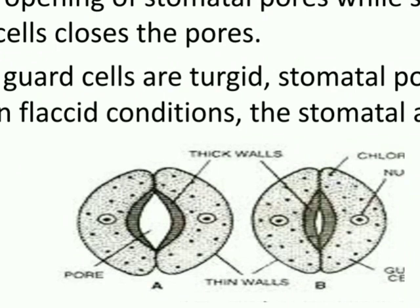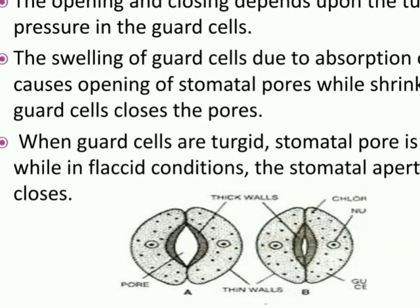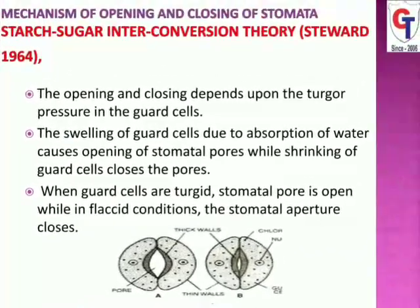During night time, the turgor pressure of the guard cell decreases. Due to the decrease in turgor pressure, exosmosis takes place and the solute present in the guard cell moves into the surrounding subsidiary cells. As a result, the guard cell becomes flaccid. Due to the guard cell becoming flaccid, the inner thick walls come into contact with each other, and as a result stomata remain closed. So turgid causes opening of stomata; flaccid causes closing of stomata.